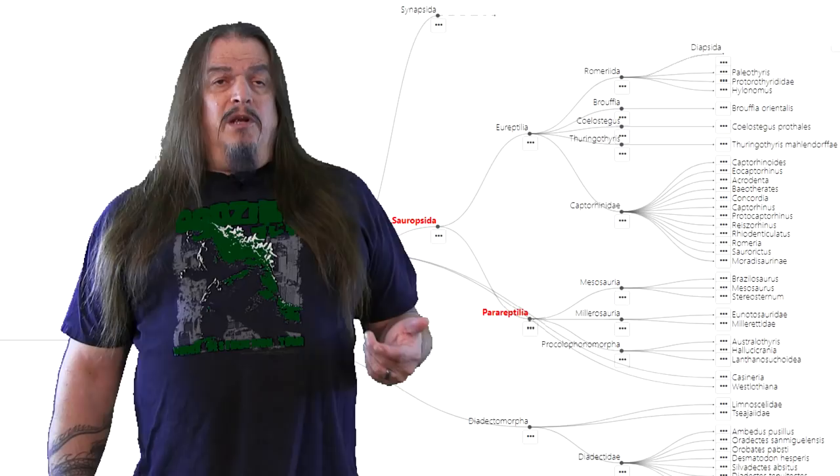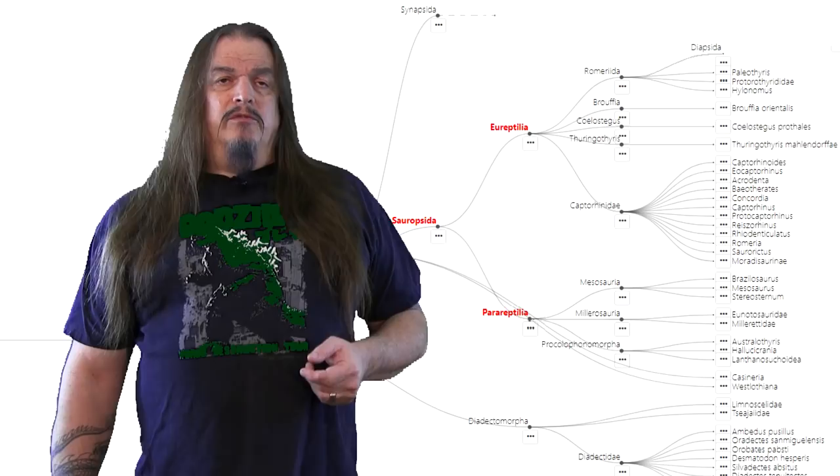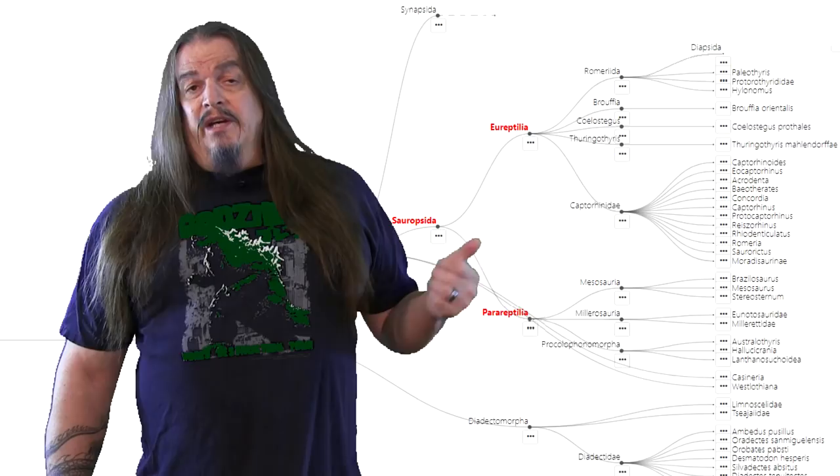When you look at this cladogram, you might think Sauropsids branched into parareptiles, meaning not quite reptiles, and eureptiles, meaning true reptiles, although they're not really true reptiles either, at least not all of them. True reptiles are in one of the subsets of Romerida called Diapsidae, which we'll get to momentarily.